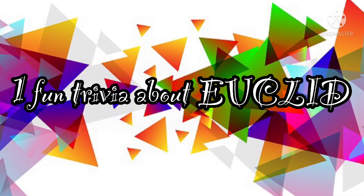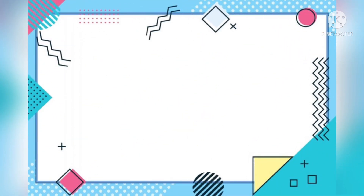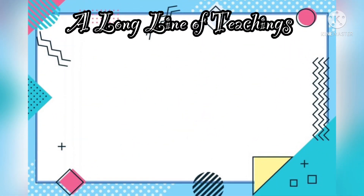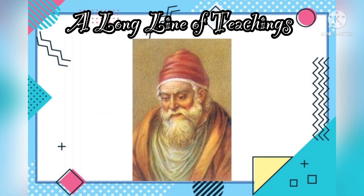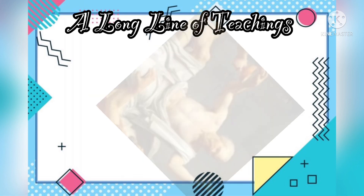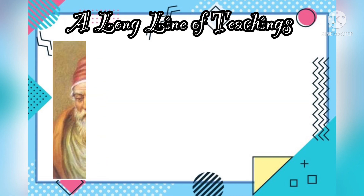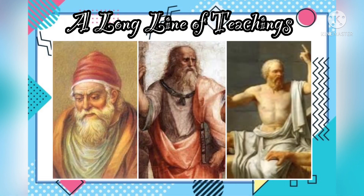One fun trivia about Euclid: a long line of teachings. Euclid was taught in his youth by the famous Greek philosopher Plato. Plato himself was taught by Socrates in Greece. To anyone familiar or interested with mathematics and science, these names are very big and deep in importance.